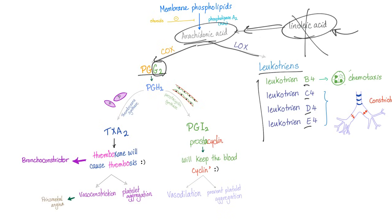Prostaglandin G2 is converted into prostaglandin H2. After prostaglandin H2, it depends on the tissue. If you are in the platelets and need coagulation, synthesize thromboxane A2 through thromboxane synthase. If you are in the endothelium and need blood flowing smoothly, produce prostacyclin through prostacyclin synthase.